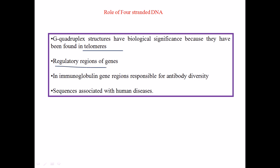These structures are found mostly in regulatory regions. We can also find them inside immunoglobulin gene regions, which are responsible for antibody diversity. Quadruplex structures have enormous versatility, presenting themselves in various places — controlling antibody diversity, regulating genes, and also appearing in sequences associated with human diseases.